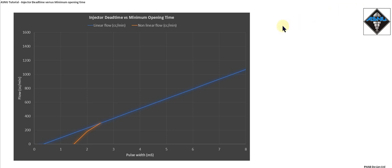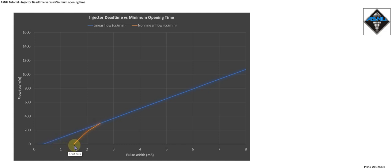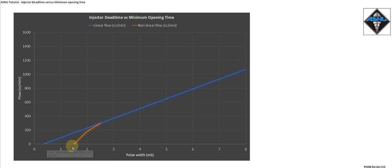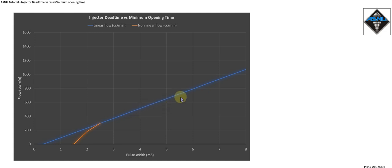Now actually what I've told you so far isn't quite correct, because at very low pulse width down at the bottom end here, the injector isn't linear at all. It's actually non-linear — the nozzle starts to open much later than the dead time, and increases in a non-linear fashion until it meets the normal slope.